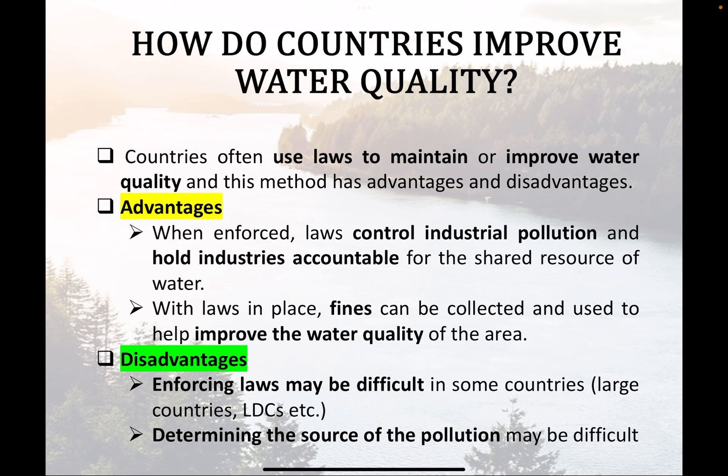The advantages of using laws are that it's a win-win for the government — you get better water quality and fines generate revenue. Disadvantages include enforcement challenges, especially in large countries. If people are very poor and have no alternative to dumping waste, strict enforcement becomes unfair. Inherently, people want to do the right thing, but sometimes there really isn't a choice available to them.